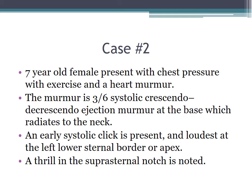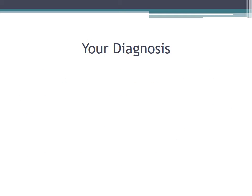Case two: a seven-year-old female presenting with chest pressure with exercise and a heart murmur. The murmur is three out of six systolic, crescendo-decrescendo, ejection-type at the base, radiating to the neck. There is an early systolic click loudest at the left lower sternal border or apex, and a thrill in the suprasternal notch.